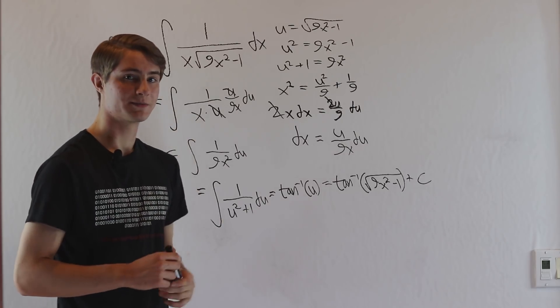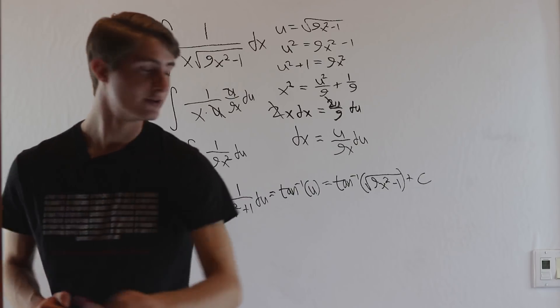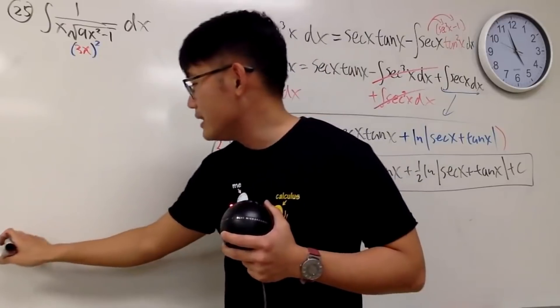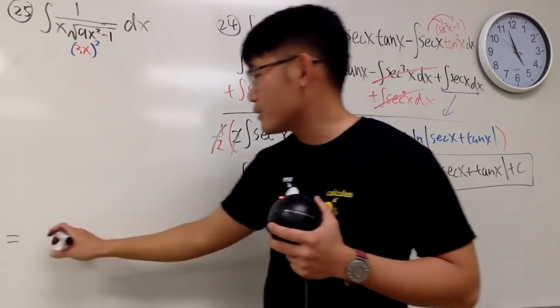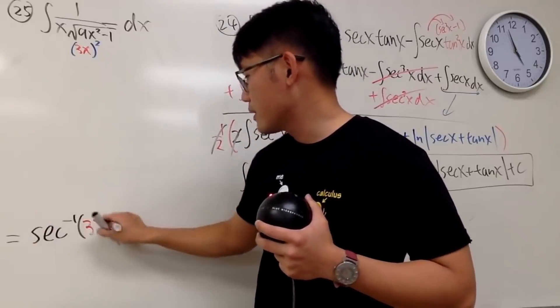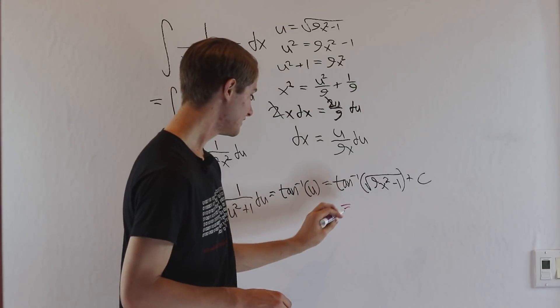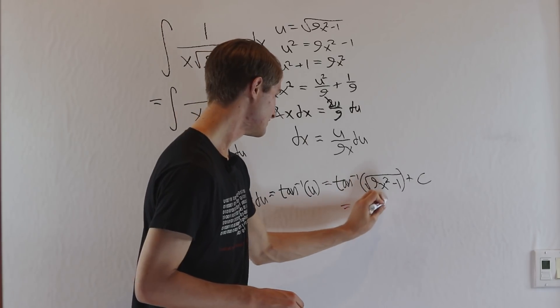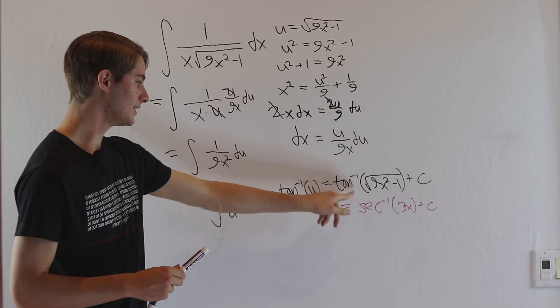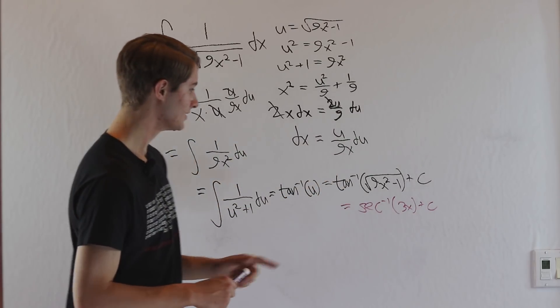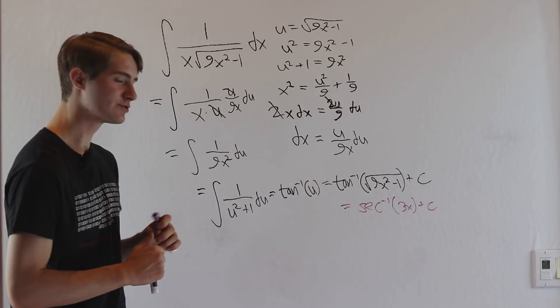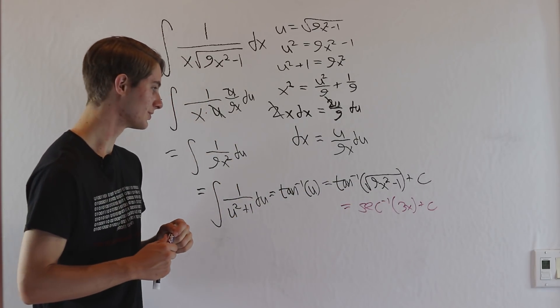Now, if you've watched Black Pen Red Pen's 100 integrals video, you might have noticed that he got a different answer. I will tell you guys the answer to this right here. It's actually just the inverse secant of that input, which is 3x. He actually gets this integral to equal the inverse secant of 3x plus c. That's kind of weird. Not only do we have a different inverse trig expression, our answer has a square root in it, and his is just 3x. That's really weird. Did we mess something up? Do we need to go back and check our work?